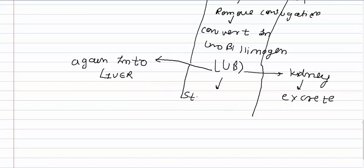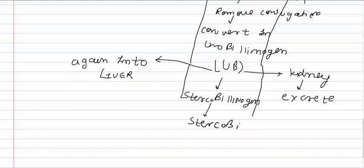This urobilinogen may also convert into stercobilinogen. Stercobilinogen then converts into stercobilin, which is excreted into the feces and gives the characteristic yellow color to the feces.